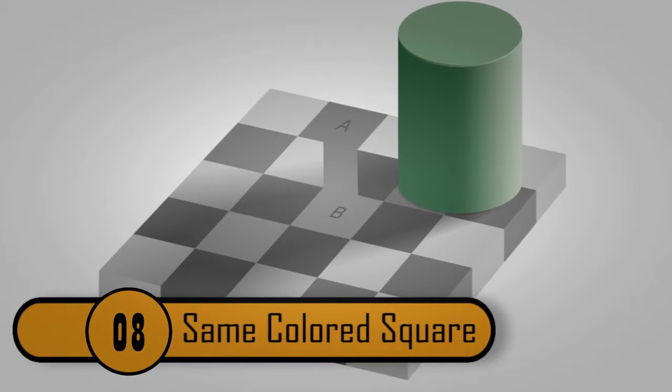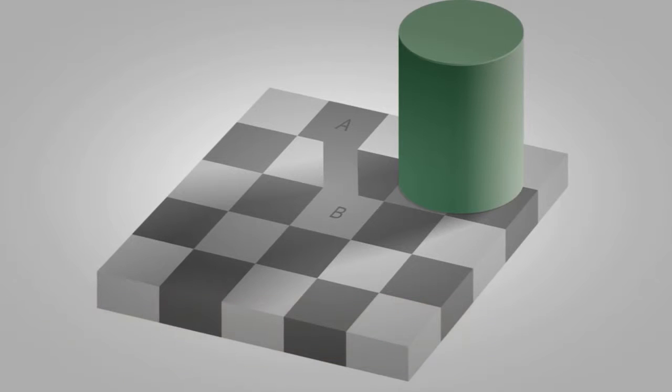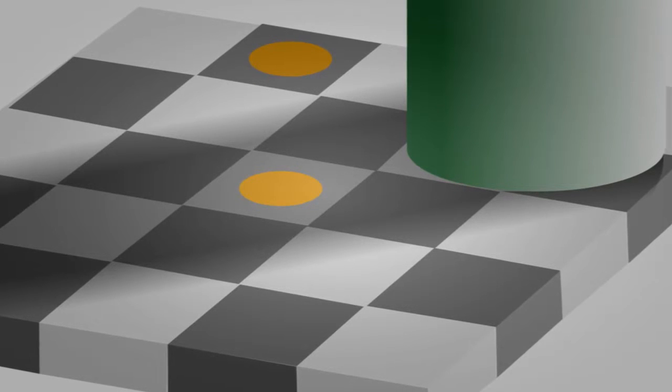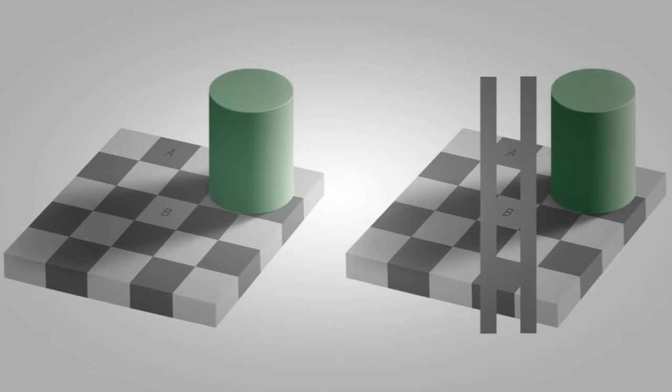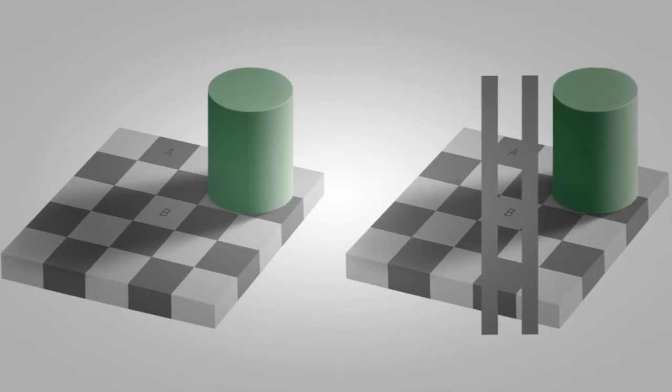Same Colored Square. If you look at this photo, it looks like the green cylinder is sitting on a checkered board. Actually, the squares that the A and B are on are the same color. It's the green cylinder that makes them look like they are different colors.